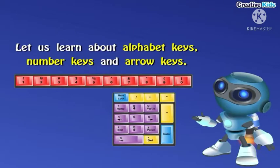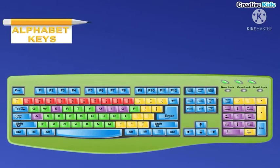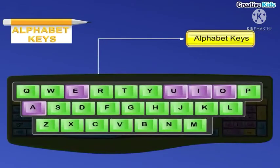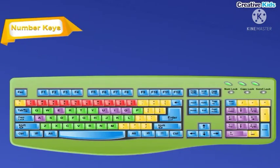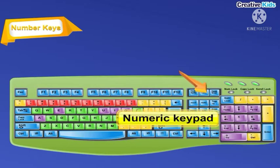Alphabet keys: these keys are used to type letters. They are marked with the English letters A to Z. Number keys: these keys are used to type numbers. They are marked with numbers 0 to 9.